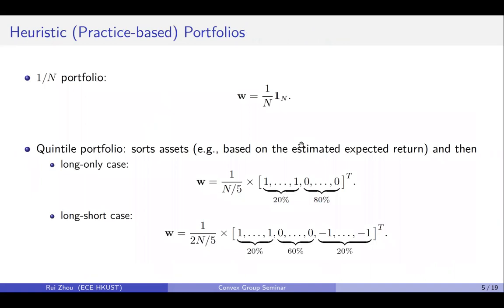Usually these heuristic or practice-based portfolios are very simple. For example, the 1/N portfolio is to do an equal allocation of all your money to all the assets.